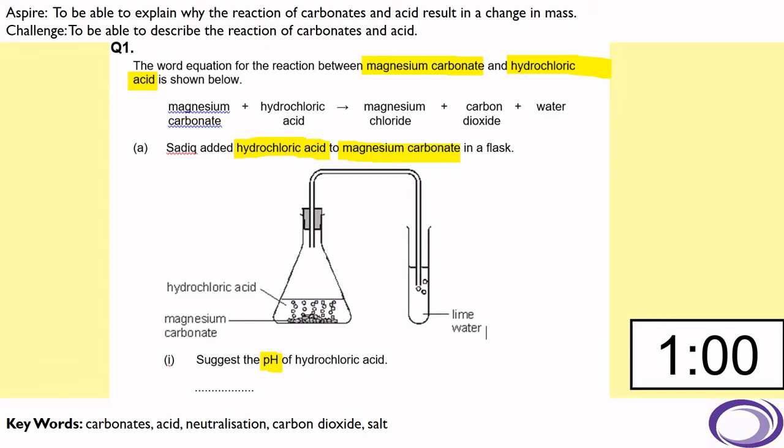So now it's time to have a go at some practice questions. So the word equation for the reaction between magnesium carbonate and hydrochloric acid is shown below. Magnesium carbonate plus hydrochloric acid forms magnesium chloride, carbon dioxide and water. Now Sadiq added hydrochloric acid to magnesium carbonate in a flask. What would be the pH of the hydrochloric acid?